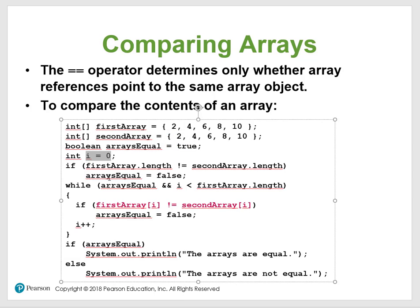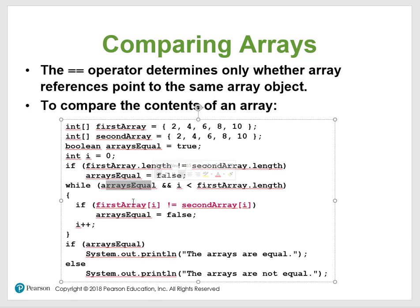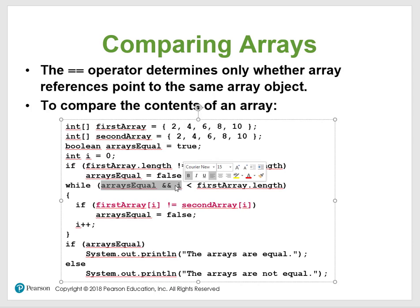Looking at this while loop — your loop control variable is arrayEqual. First, if the first array length is not equal to the second array length, they are not equal. But here both have length five, so five equals five is true. So arrayEqual stays true and we enter the loop. i is zero, and this is an AND condition — both statements must be true to continue.